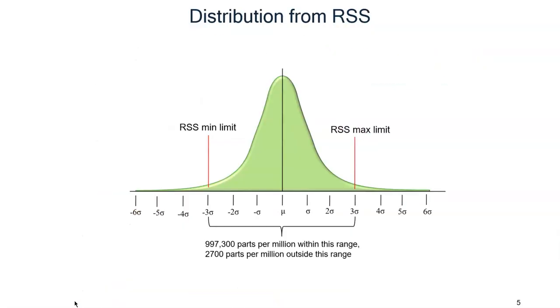This is a representation of the RSS limits. Note that the max and min limits are at plus and minus 3 standard deviations from the mean. Approximately 2,700 parts per million, or assemblies per million, are likely to fall outside of these limits.